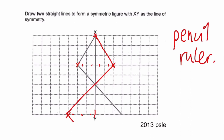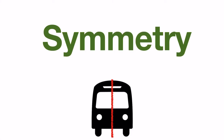To check your answer: given the line of symmetry, this point matches two square units away on the other side, and this point matches this point - you can see it's equal distance away. Your answer will be perfectly correct. That's the end of the revision for PSLE questions on symmetry. If you have any questions or would like me to share more about the topic, please write it down in the comments below, and please remember to subscribe.